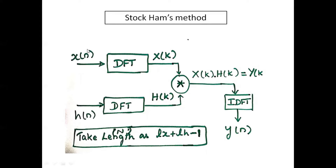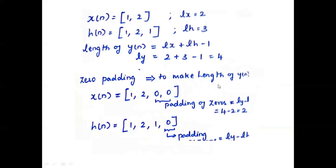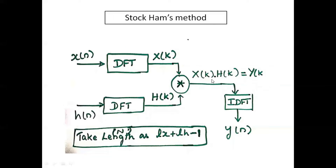Consider two sequences X of n and H of n. First we have to apply the DFT of X of n and the DFT of H of n. X of k is the DFT output. Multiply these two outputs to get Y of k, where Y of k is equal to X of k into H of k. Then apply IDFT to get Y of n. The length of Y of n is LX plus LH minus 1.